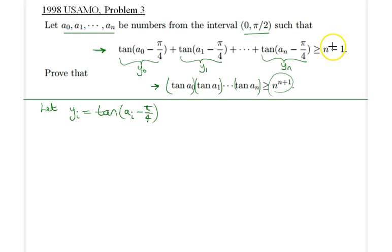This condition about the sum of these tangents being greater than or equal to n minus 1 translates to the following inequality. So y₀ plus y₁ all the way summed up to y sub n is greater than or equal to n minus 1.